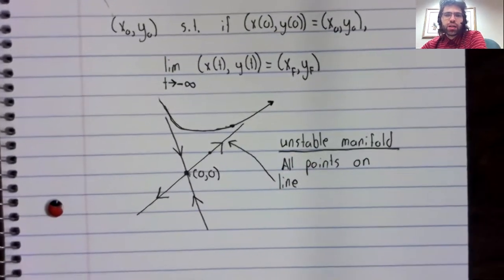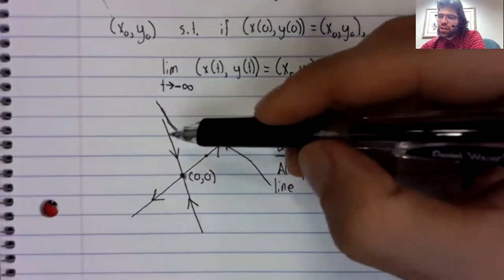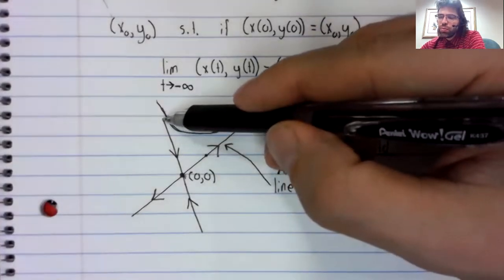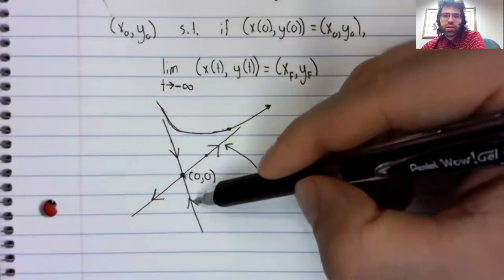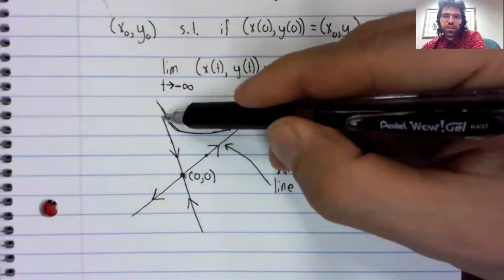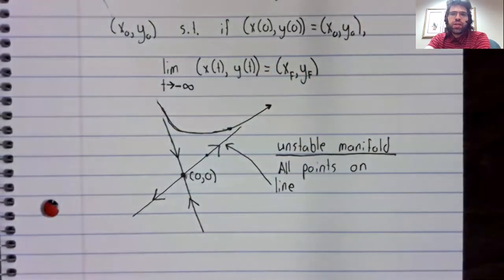So the unstable manifold is all of the points on this line. Let's remind ourselves that the stable manifold is all of the points on this line. And leave you with the following thought.